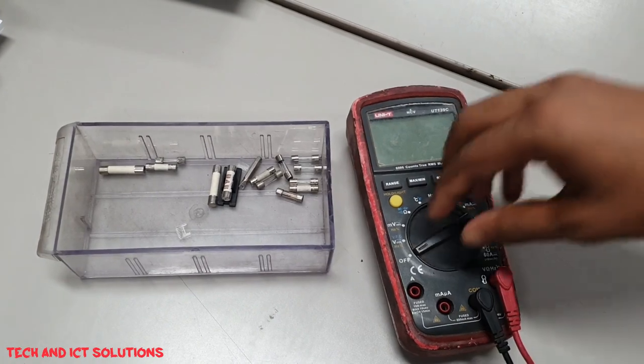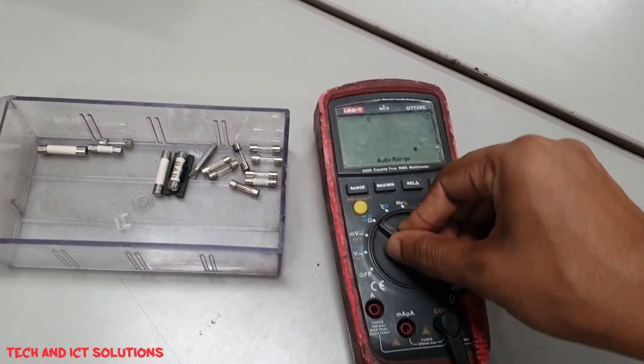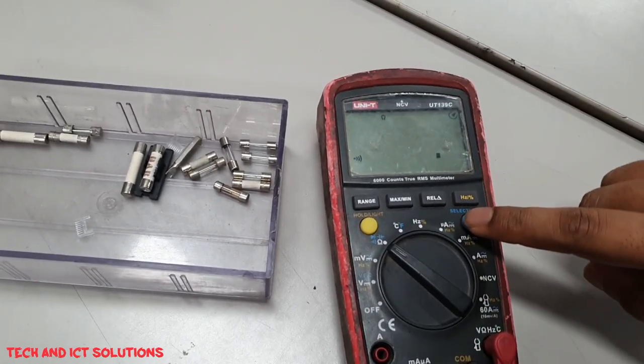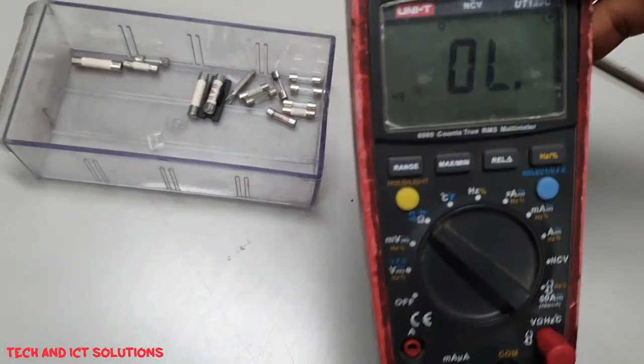First, set the multimeter to measure resistance. After setting the selector in ohm, select beep mode, or sound mode.